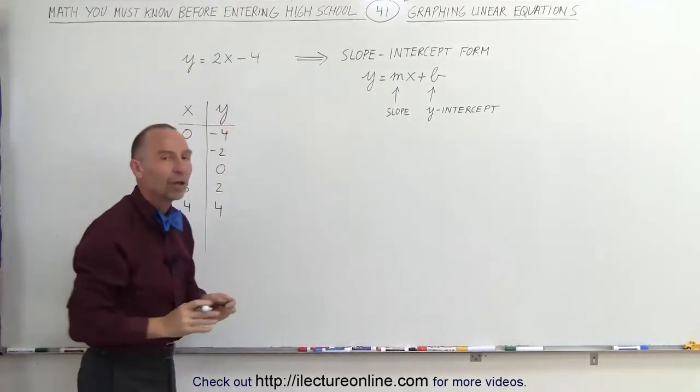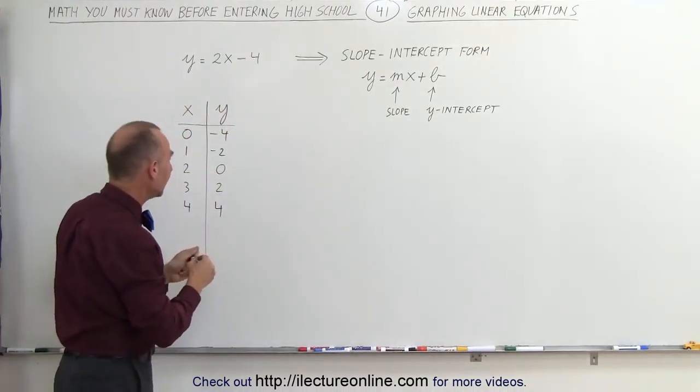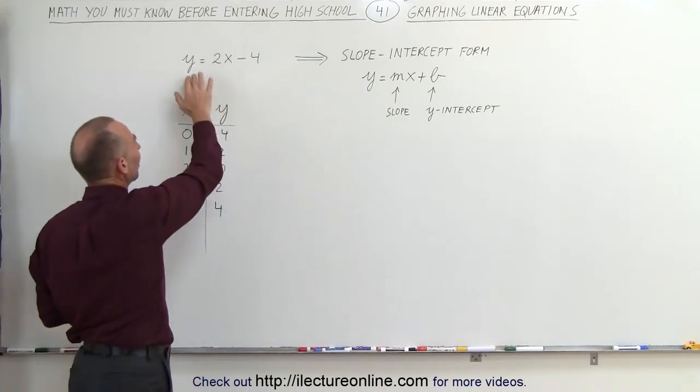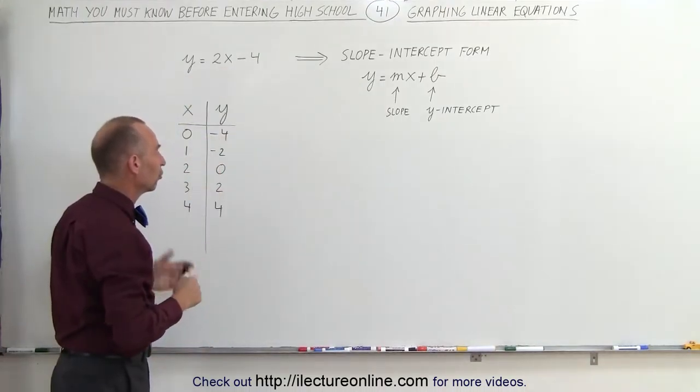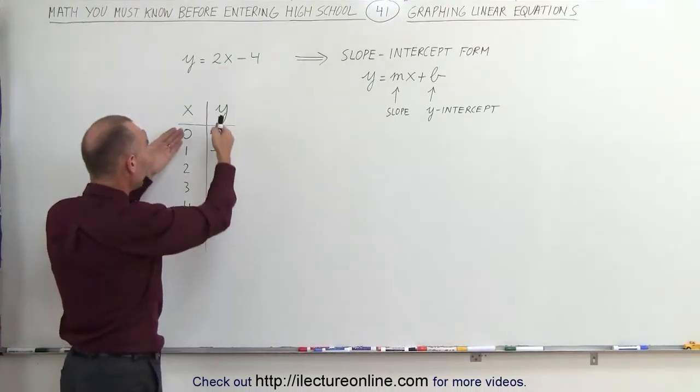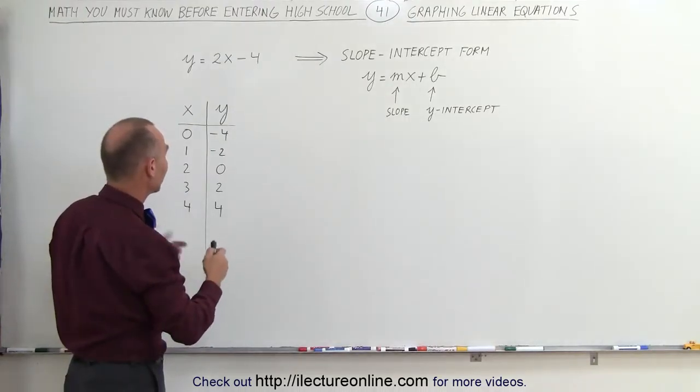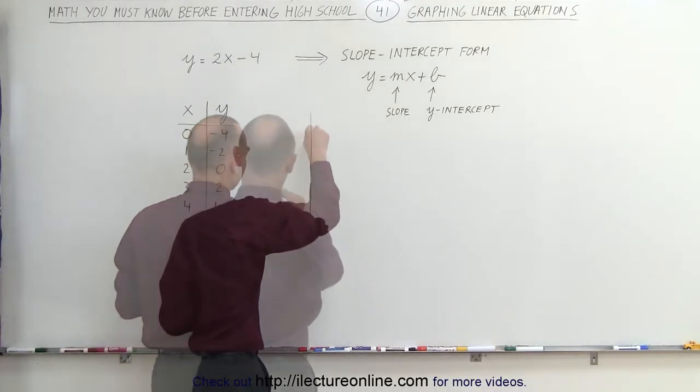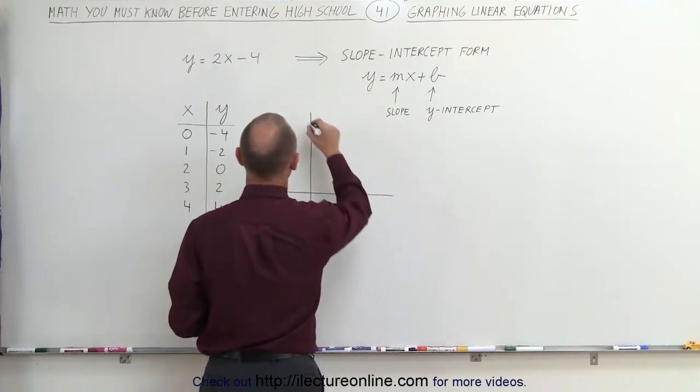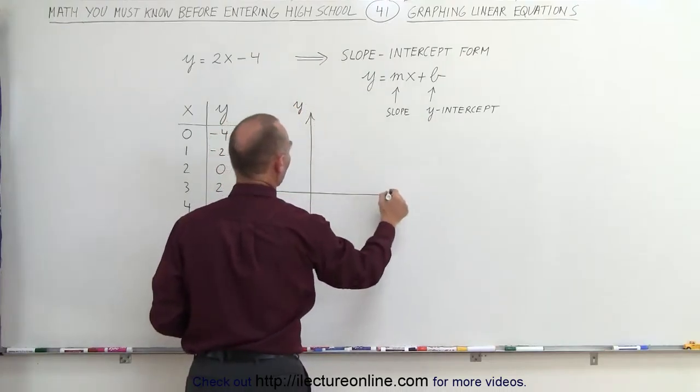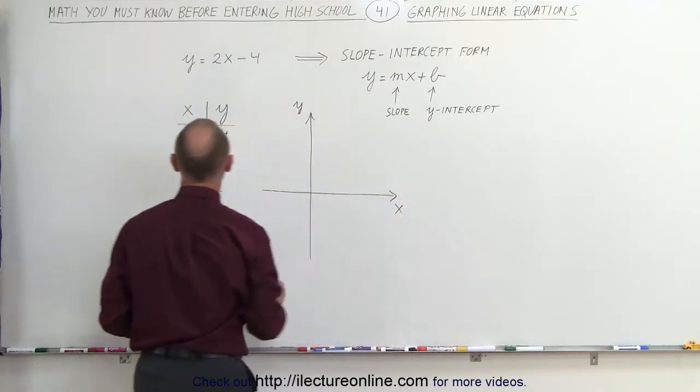This is what we call a table of values, which explain the ordered pairs that satisfy this equation. So what we can do is plug in those ordered pairs on an xy coordinate system and see what solution looks like. There we go. Here's my y-axis, here's my x-axis, and let's plug in the ordered pairs.